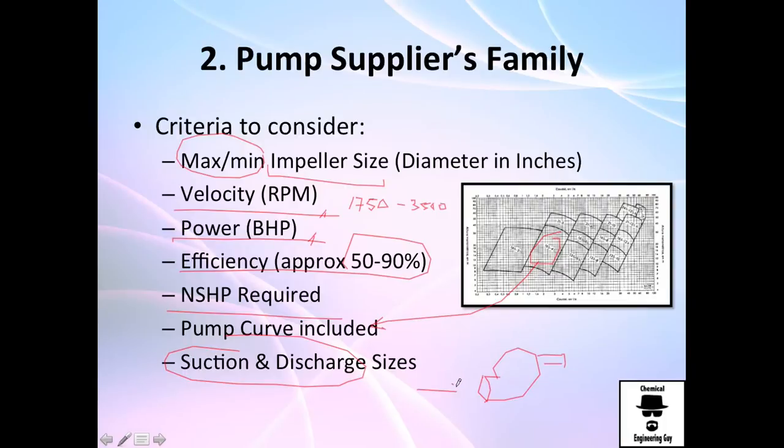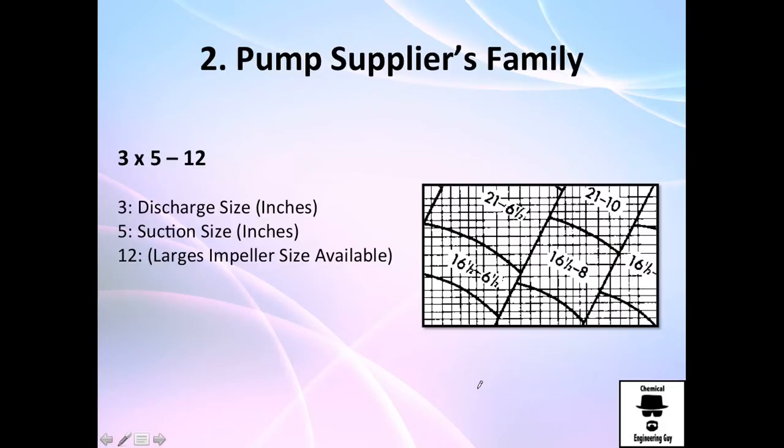If you're operating with a one-inch pipe and the pump you want is one and a half inches in the suction and two inches in the discharge, you'll need to find a reducer and an expander to make the connections work.